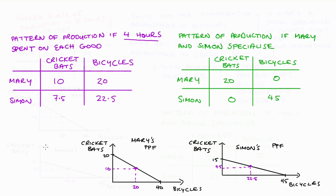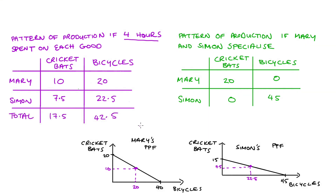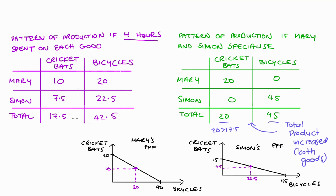Now let's compare those two tables and think about our total production of each good in each situation. When Mary and Simon didn't specialize — dividing their time 50-50 — they made together a total of 17.5 cricket bats (10 from Mary and 7.5 from Simon), and 42.5 bicycles (Mary made 20 and Simon made 22.5). When they specialize, Mary made 20 cricket bats and Simon made 45 bicycles. Comparing the tables: cricket bat production increased from 17.5 to 20, and bicycle production increased from 42.5 to 45. So as a result of specialization, our total productivity has increased.